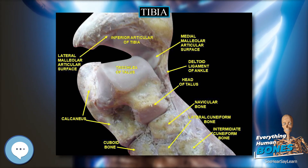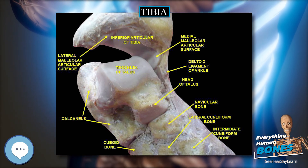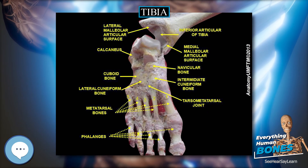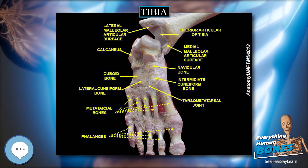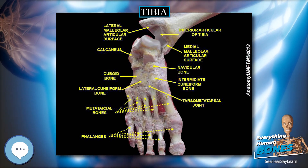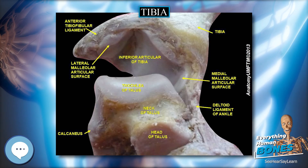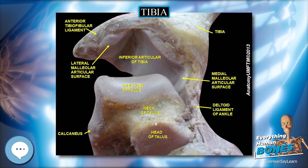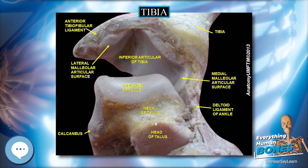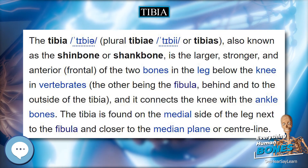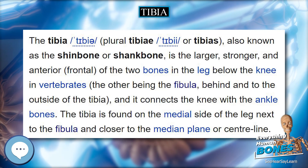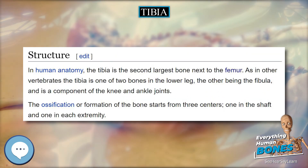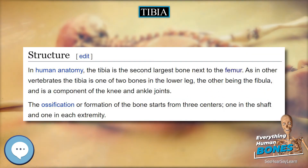The center for the upper epiphysis appears before or shortly after birth at close to 34 weeks gestation; it is flattened in form, and has a thin tongue-shaped process in front, which forms the tuberosity; that for the lower epiphysis appears in the second year. The lower epiphysis fuses with the tibial shaft at about the 18th year, and the upper one fuses about the 20th year.